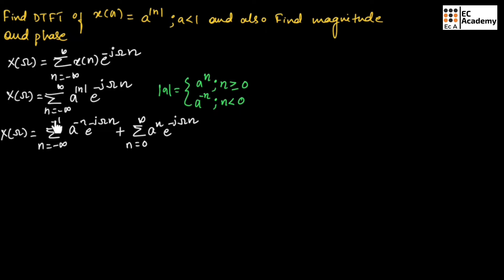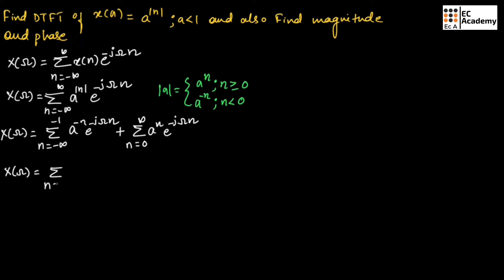We have taken the summation from minus infinity to minus 1 since n is less than 0, with value a^(−n). The summation from 0 to infinity is for n greater than or equal to 0, with value a^n. We can rewrite this as summation from n = minus infinity to minus 1 of (a^(−1) · e^(−jω))^n, plus summation from n = 0 to infinity of (a · e^(−jω))^n.